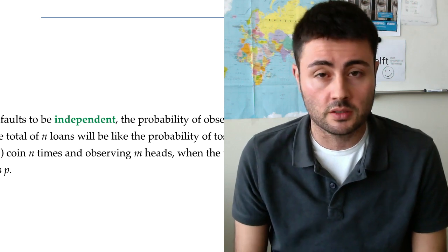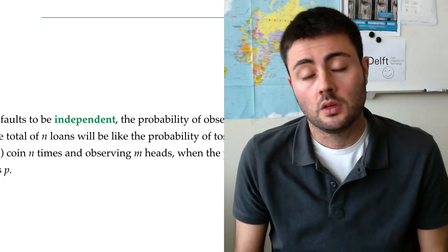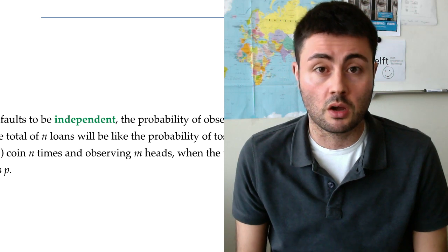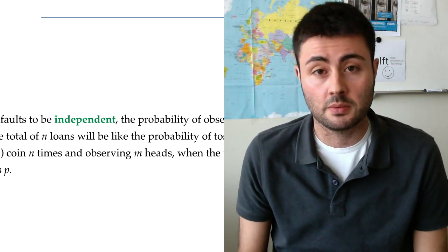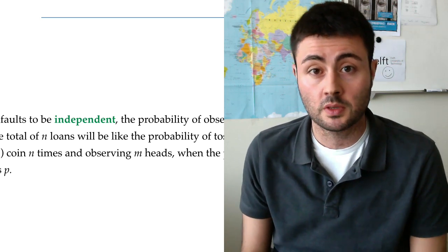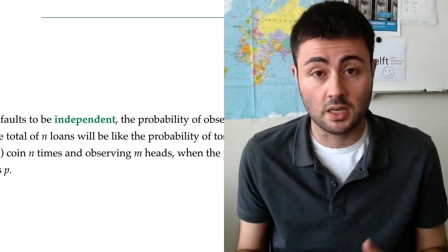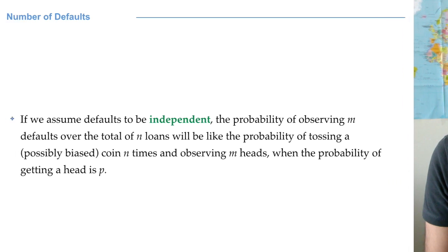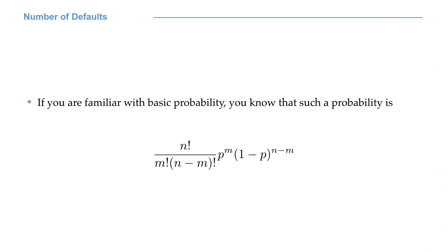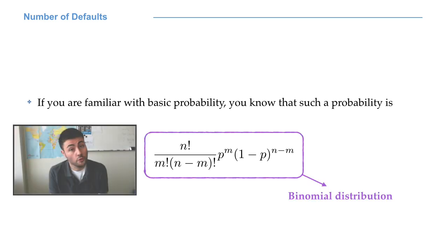Obviously, in a fair coin this probability is one-half. In our case we can assume the coin to be biased, so that P is not one-half, but the mechanism is exactly the same. The probability we have just described can be expressed using the formula you see on your screen. Do you recognize the binomial distribution?